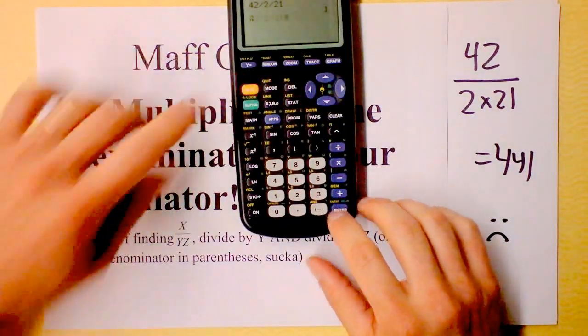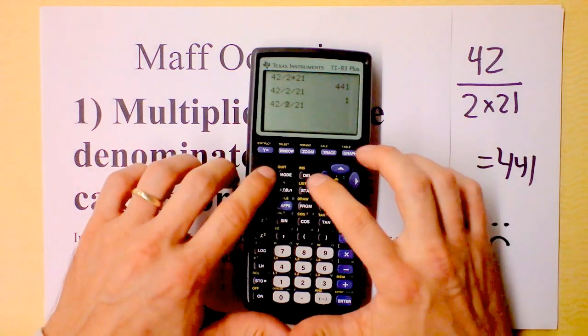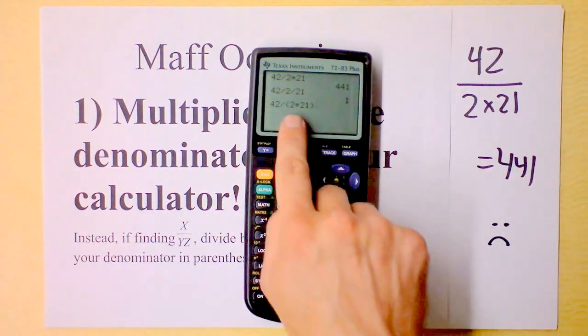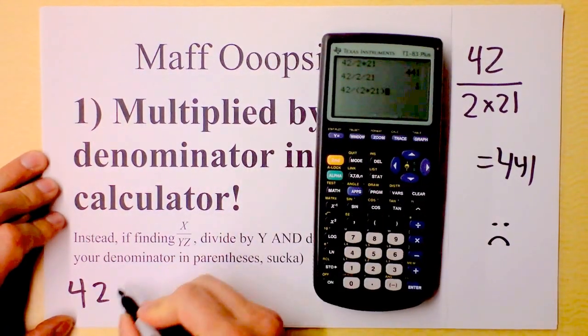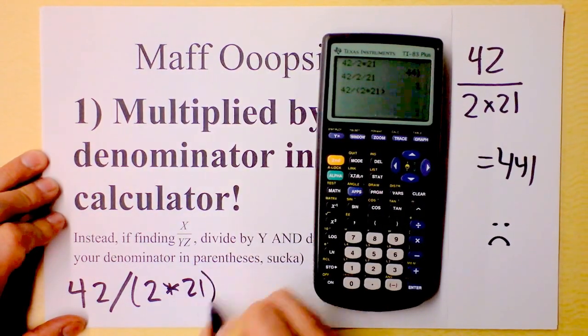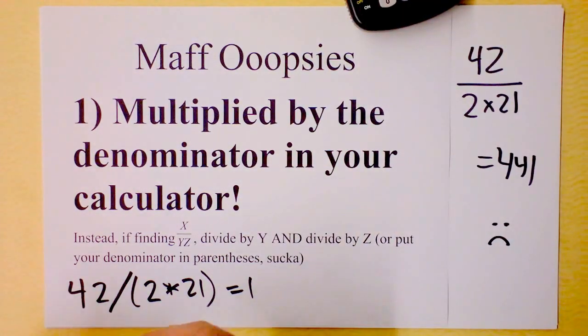Or, I could do second entry and go up to this and say, let's insert some parentheses. I've taken the denominator and put that in parentheses. Right now it says 42 divided by the quantity 2 times 21, close parentheses. This will also equal 1, not 441. Great.